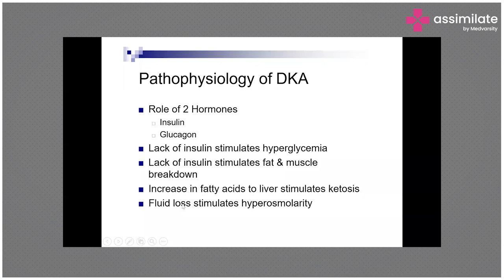In type 1 diabetes there is absolute deficiency of insulin, and in type 2 diabetes there may be presence of insulin secreted by the pancreatic cells, but there is some amount of resistance to the action of insulin. That's why even if insulin levels may be normal, there is resistance to its action and sugar levels tend to rise.